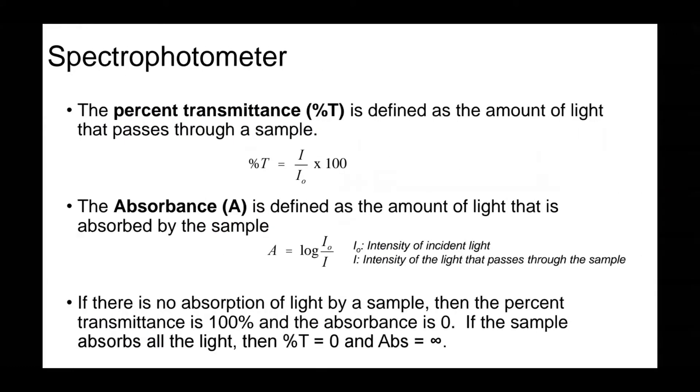In order to use a spectrophotometer, you have to be familiar with some terms. The percent transmittance is defined as the amount of light that passes through a sample. Percent transmittance equals the intensity of light that passes through the sample divided by the intensity of incident light times 100.